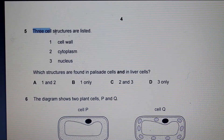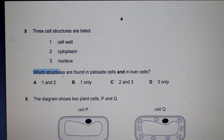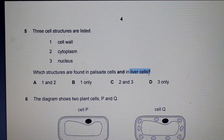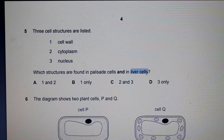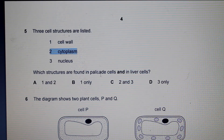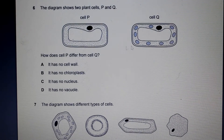Here three cell structures are listed: cell wall, cytoplasm, and nucleus. The question asks which structures are found in both palisade cells and liver cells. Palisade cells are plant cells found in leaves; liver cells are animal cells. A cell wall is found in plant cells but not animal cells, so we rule that out. Cytoplasm is found in both plant and animal cells, and a nucleus is also found in both. The answer is C.